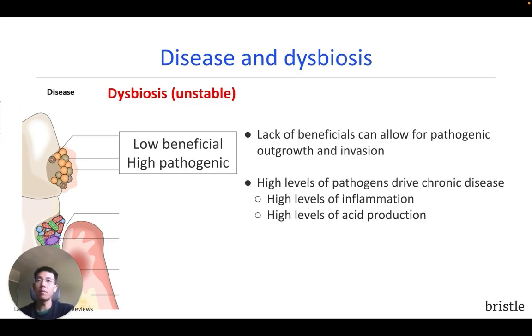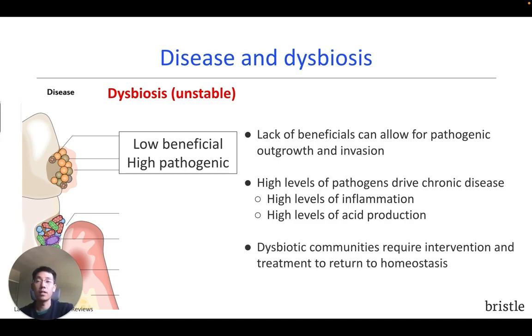Similarly, in gum disease, beneficial microbes that keep the community stable are missing, and this allows for the overabundance and growth of pathogens. Dysbiosis often requires more aggressive interventions to return to homeostasis.